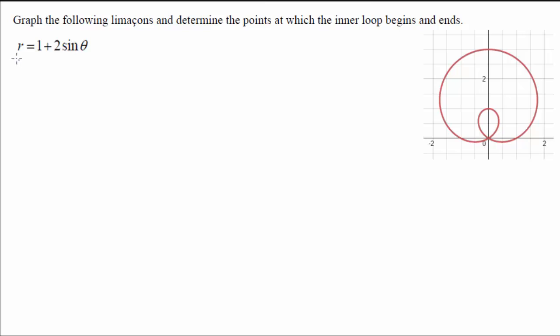So if I have a problem like r equals 1 plus 2 sine theta, that is called a limaçon, and it has an inner loop because this right here is actually the graph of what it looks like.